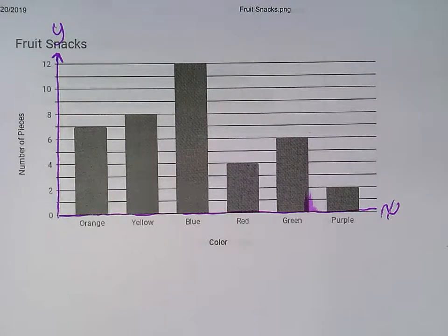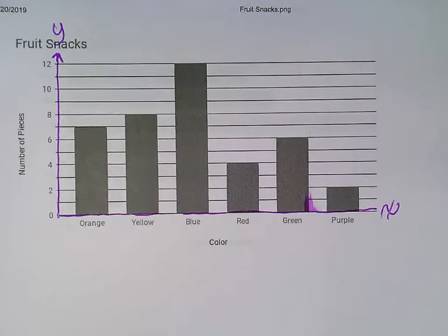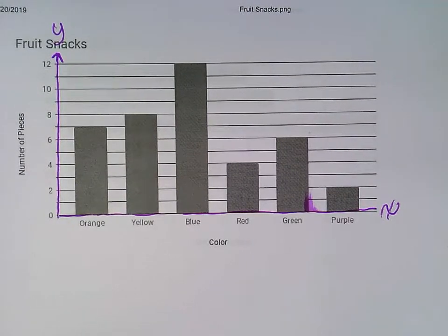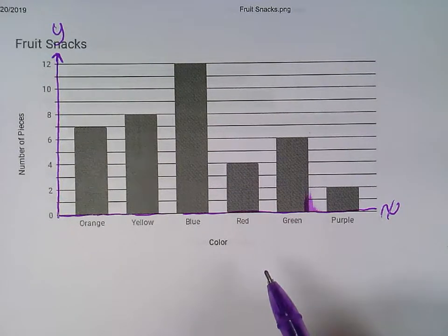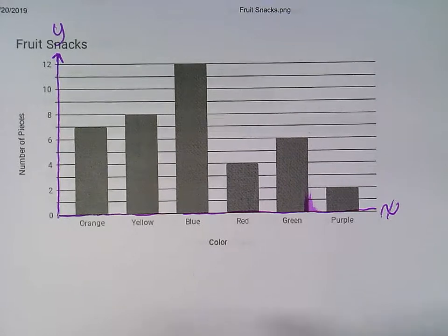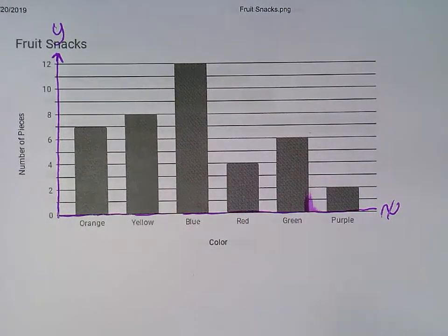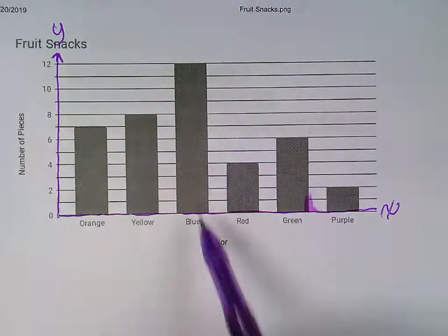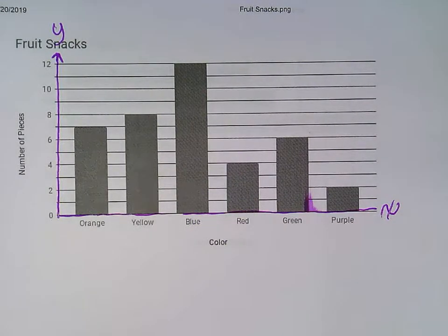So there's a couple different things you're going to have to answer when it comes to graphs. One of those things is you're going to have to be able to tell the range of the graph. To get the range of the graph, you subtract the smallest amount, the smallest data point, from the largest amount of data. So if I look through here, I can see my bars and it's easy to find the largest one. The largest one is the tallest one. So my biggest amount of data is blue.